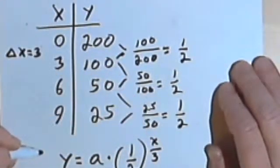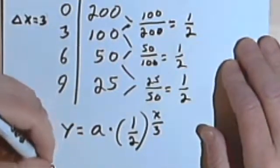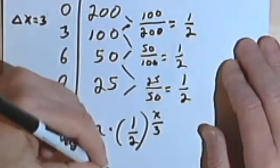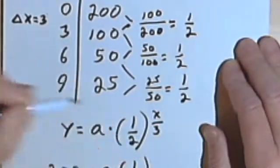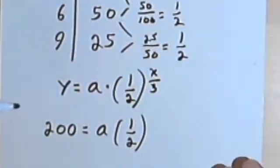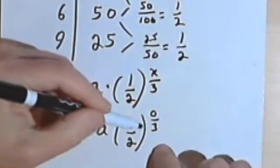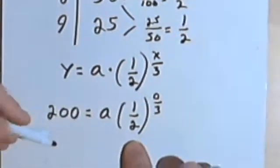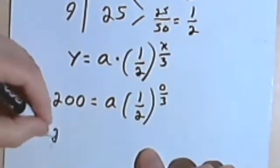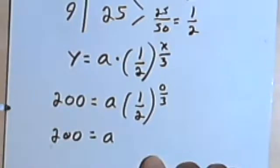And now let's see if I can figure out what a has to be. So I'll go back to this pair, 0 and 200. So when y is 200, I'm going to have a times b. b is my common ratio, one-half. And I'm going to raise that to x is 0, the 0 over 3 power. Well, 0 over 3 is 0. Any number, like one-half, raised to the 0 power is 1. So this thing is the same as 200 equals a times 1, or just a. So a must be 200.